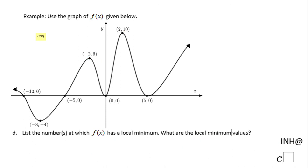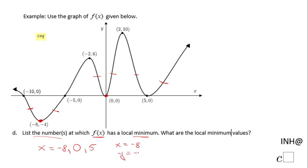The last question asks: list the numbers at which f of x has a local minimum. A local minimum happens when the graph changes from decreasing to increasing. We see one at x equals negative 8, one at x equals 0, and one at x equals 5. The local minimum values are: y equals negative 4 at x equals negative 8, and y equals 0 at both x equals 0 and x equals 5.